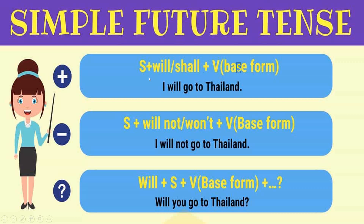For negative sentences, you add 'not' after 'will.' You can also use the contraction 'won't' instead of 'will not,' followed by the base form of the verb. For example: 'I will not go to Thailand' or 'I won't go to Thailand.'